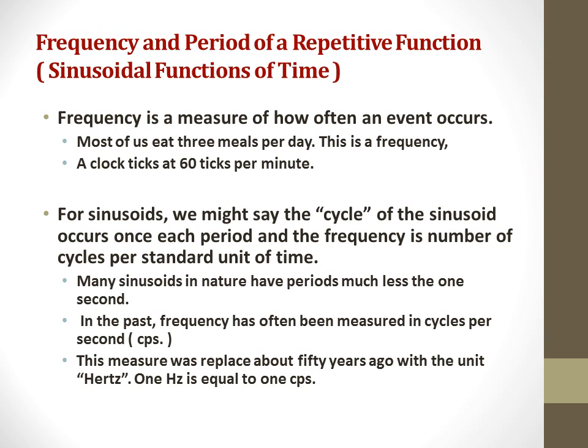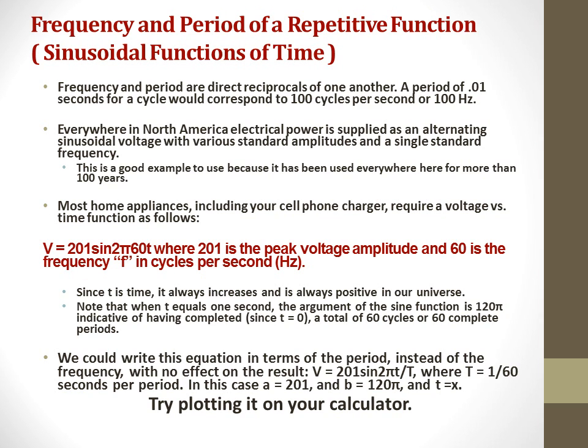Many sinusoids in nature have periods much less than one second. Things happen very fast or very slowly in nature. In the past, frequency has often been measured as cycles per second. This measure was replaced about 50 years ago with the unit hertz. One hertz is equal to one cycle per second. Frequency and period are direct reciprocals of one another. A period of .01 seconds for a cycle would correspond to 100 cycles per second or 100 Hz.